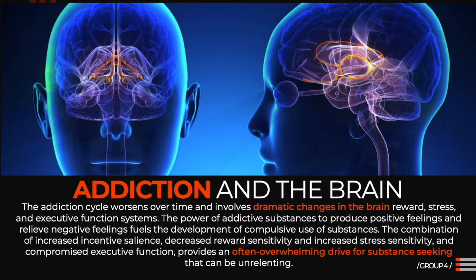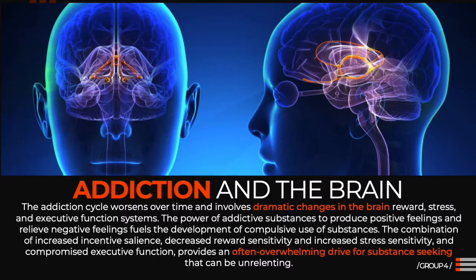When the prefrontal cortex is compromised, glutamate activity increases, which drives substance use habits associated with craving and disrupts how dopamine influences the frontal cortex. The over-activation of the go system in the prefrontal cortex promotes habit-like substance seeking, while the under-activation of the stop system promotes impulsive and compulsive substance seeking. The addiction cycle worsens over time and involves dramatic brain reward, stress, and executive function systems. The combination of increased incentive salience, decreased reward sensitivity, increased stress sensitivity, and compromised executive function provides an overwhelming drive for substance seeking that can be unrelenting.